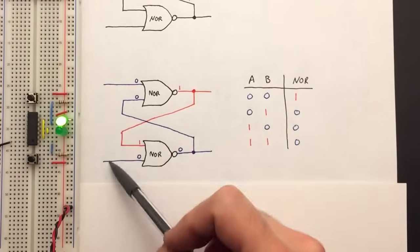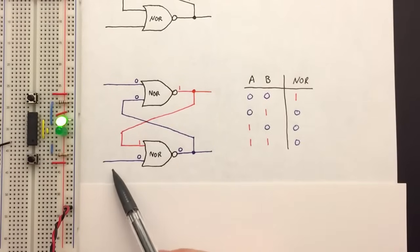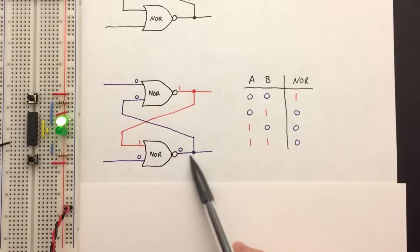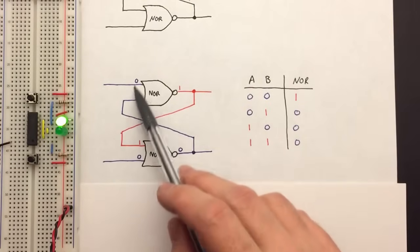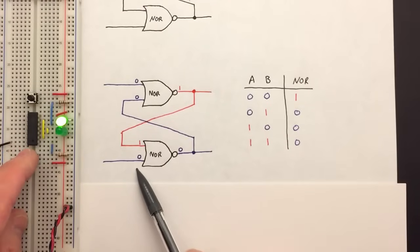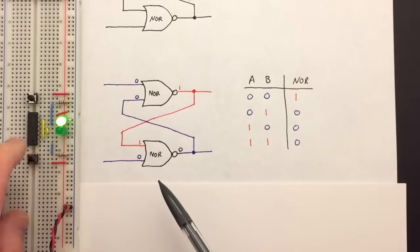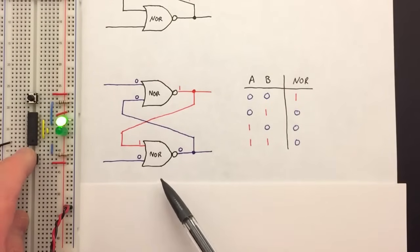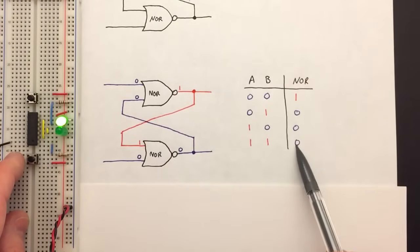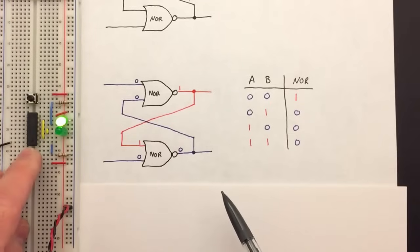So now what happens if we start changing these inputs? The bottom input is fairly straightforward. If we turn the bottom input on, the bottom gate inputs will be one and one, and the output is still zero. So nothing changes — pushing this bottom button has no effect. We can push it as much as we want: it just goes from one-zero to one-one, the output stays the same, nothing changes.